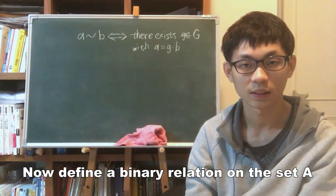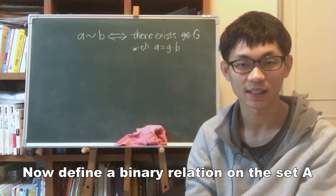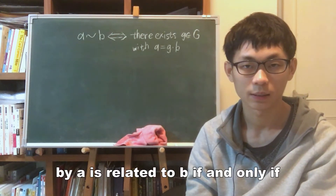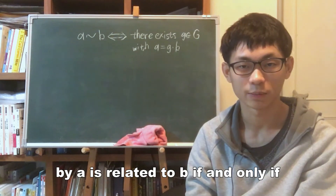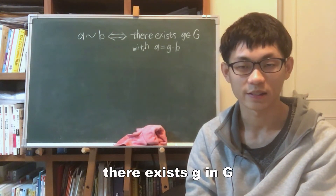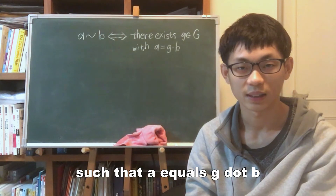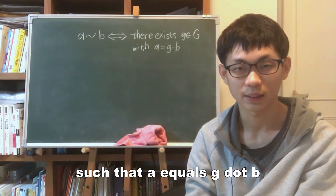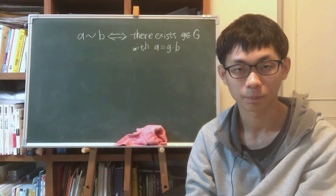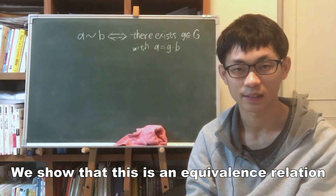Now define a binary relation on the set A by: a is related to b if and only if there exists g in G such that a = g · b. We show that this is an equivalence relation.